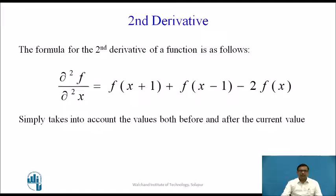The formula for the second derivative of a function f(x,y) is given as: ∂²f/∂x² = f(x+1) + f(x−1) − 2·f(x). This takes the second derivative of the function in the x direction, taking into account the values both before and after the current value f(x).